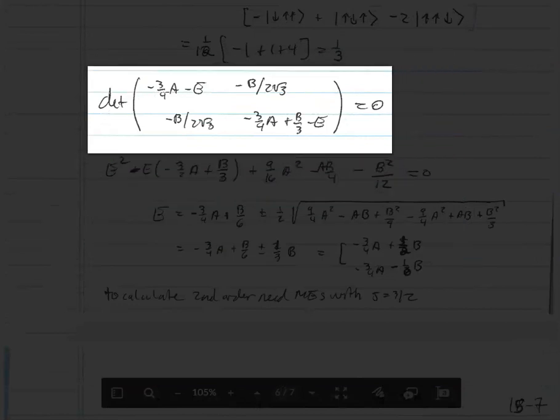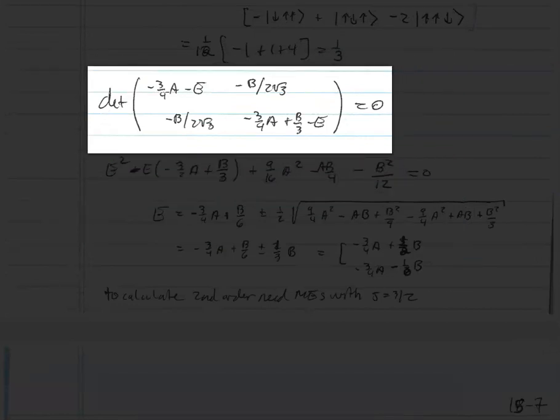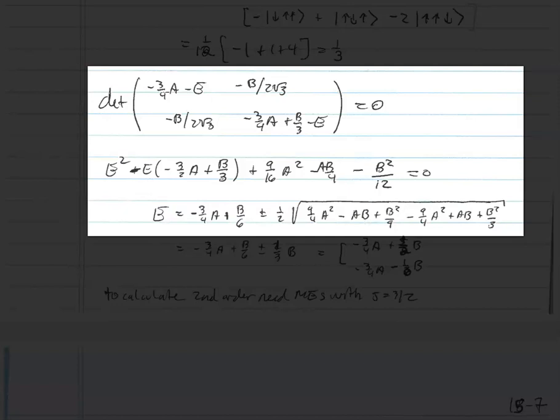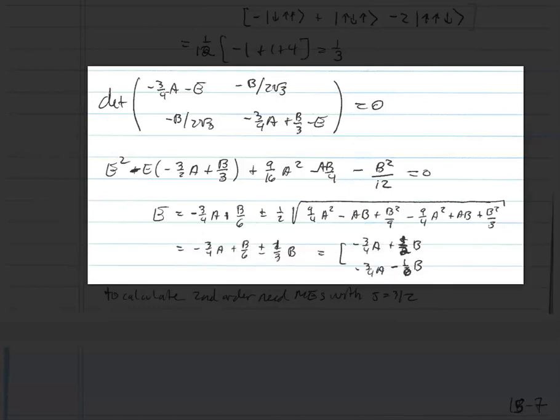This gives a 2×2 matrix with diagonal entries (−3A/4 − E) and (−3A/4 + B/3 − E), and off-diagonal entries −B/(2√3). Computing the determinant gives a quadratic. Solving it, the A² and AB cross terms cancel, leaving only a B² term with a perfect square root: the two roots are −3A/4 + B/2 and −3A/4 − B/6.